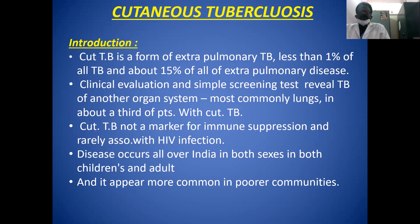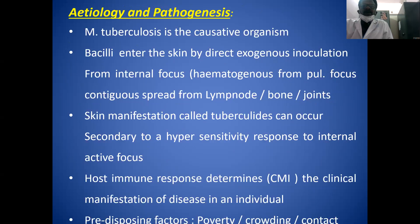In about a third of patients with cutaneous tuberculosis, another organ is involved. Cutaneous tuberculosis is not a marker for immune suppression, and it is rarely associated with HIV infection. The disease occurs all over India, in both sexes, in both children and adults, and appears more common in poorer communities.